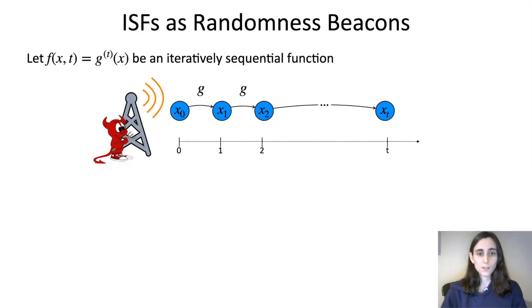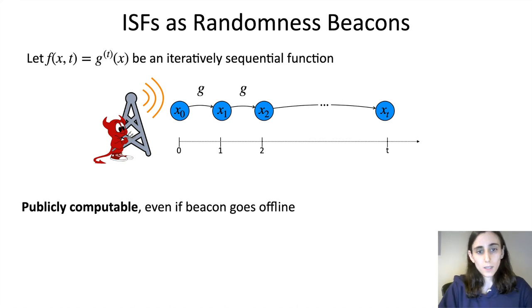If we go back to randomness beacons, let's see what happens when we use an iteratively sequential function. We can start with some initial seed x0, and each value of the beacon will just be obtained by applying g to the previous value. This gives us some good properties. First of all, it's publicly computable. Even if this beacon, this untrusted service, goes offline, we actually don't need it. We can just compute it ourselves because by definition of g, there's no private key or private state or anything like that.